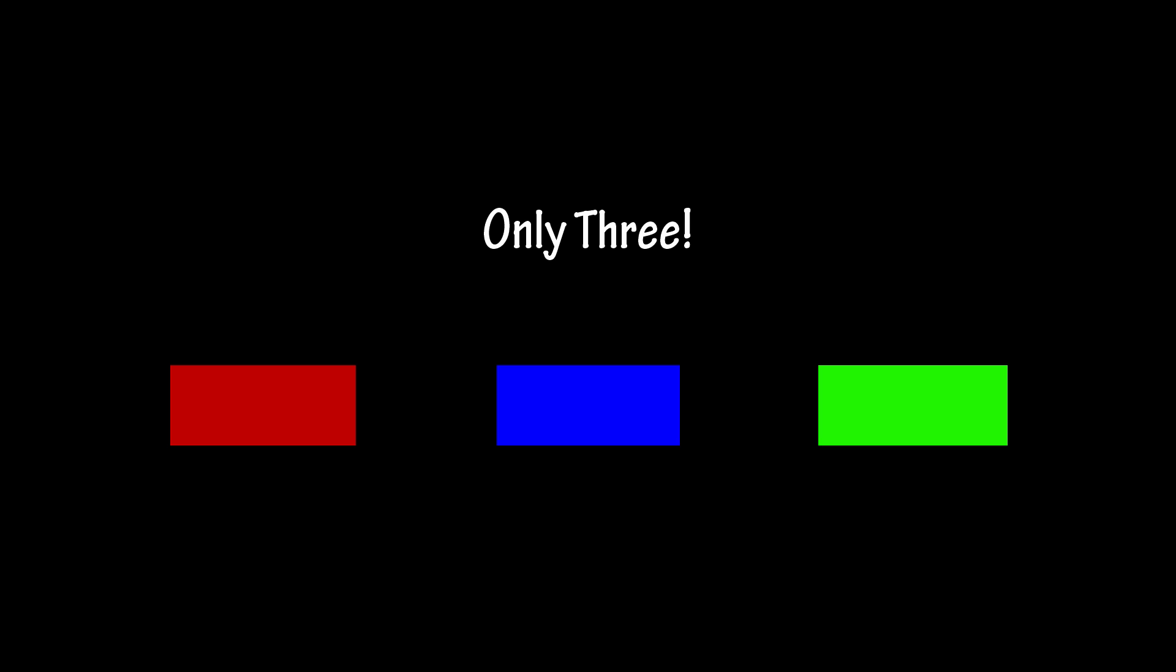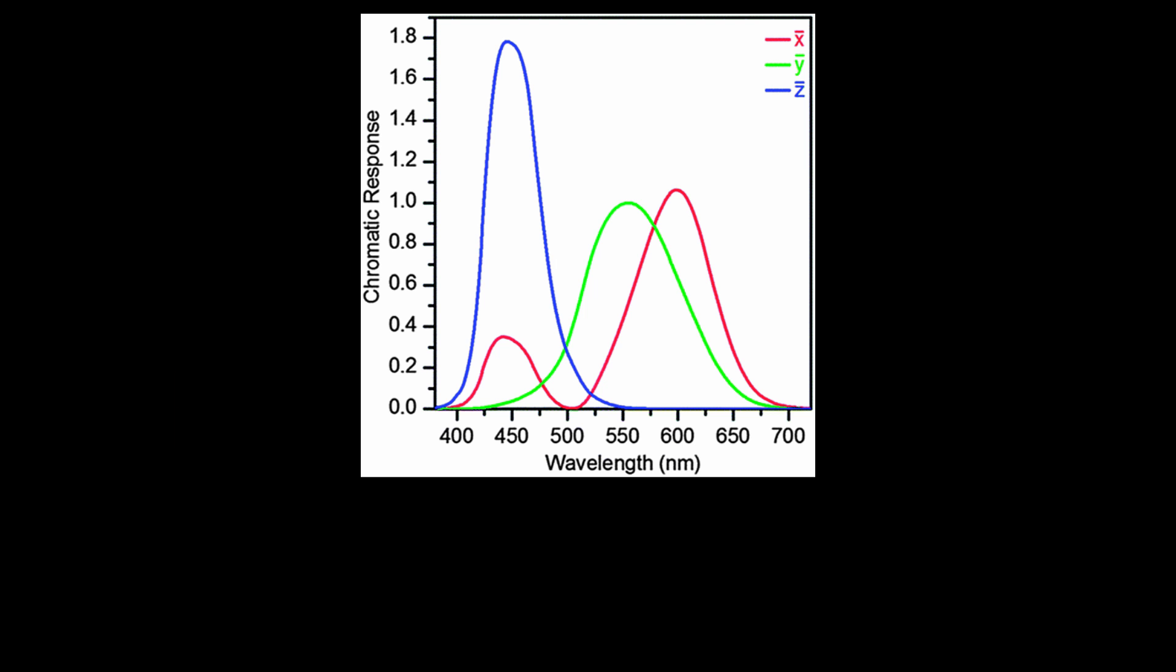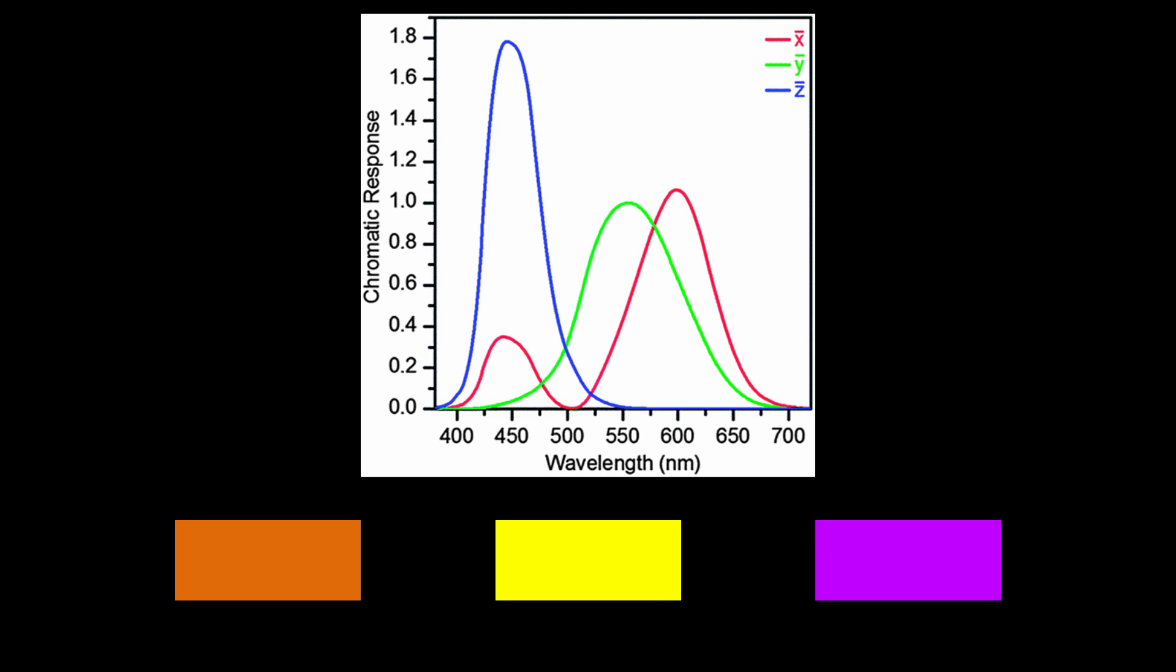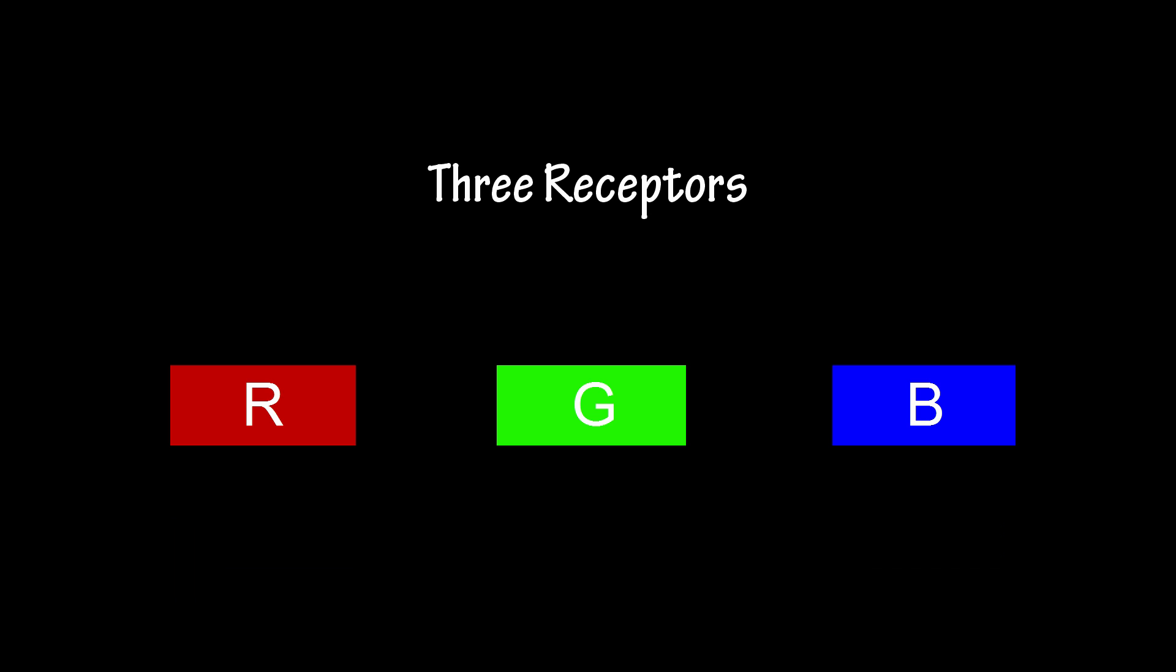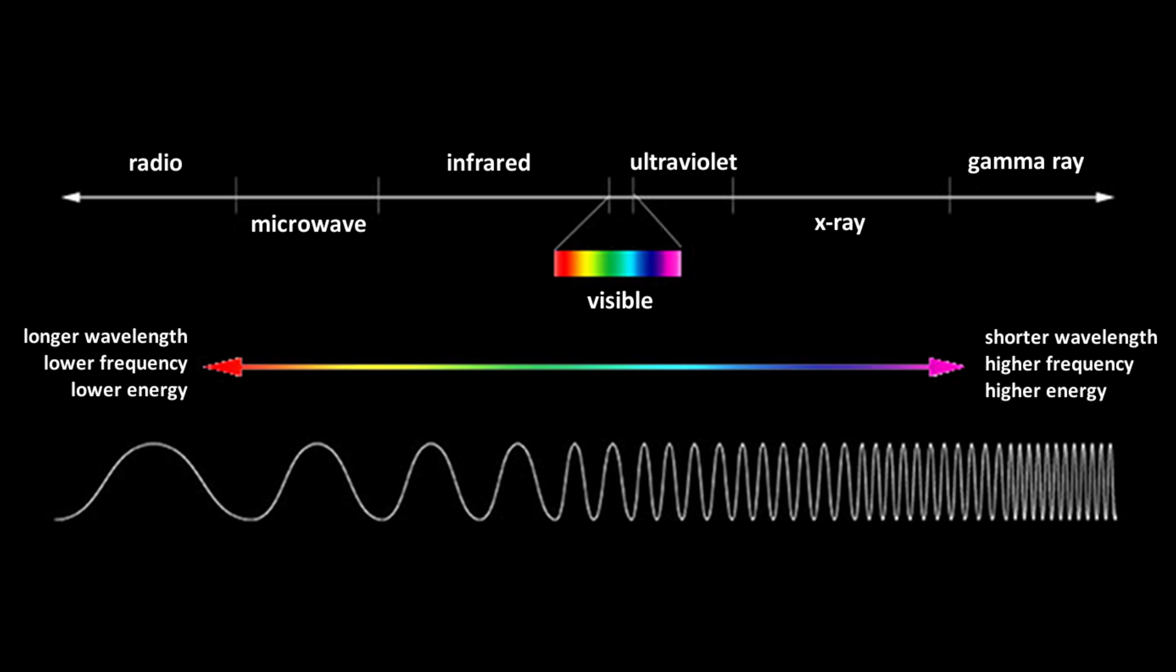In our retina, cones can be one of only three receptors: red, blue, or green. These receptors detect different frequencies and combine to give us colors like orange, yellow, and violet. With these three receptors, we can see approximately 300 different shades of colors.